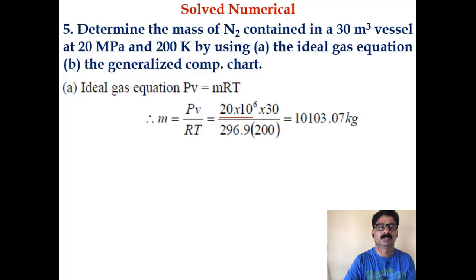P is 20 megapascal times 10 to the 6, V is 30 cubic meters. You can write this as capital V here because it is total volume and not specific volume. R is 296.9 for nitrogen. If you don't know, you have to calculate R bar by molecular weight of nitrogen. Temperature is 200, so you will get 10103.07 kilograms.